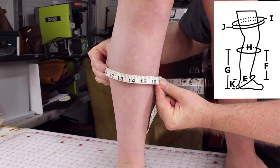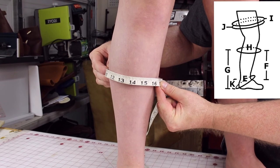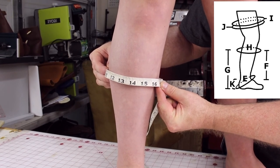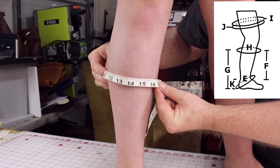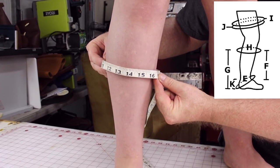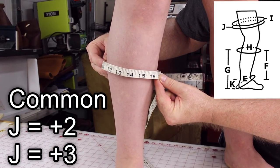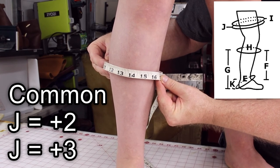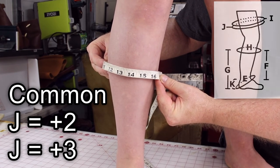Wherever you find where you want your boot in height, expressed to J as a plus number, which is basically your I number plus the extra room that you want. Generally expressed again as a plus two, plus three, and at most a plus four.